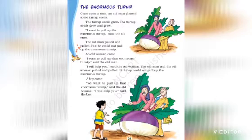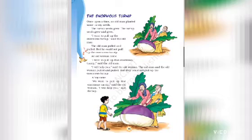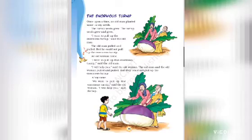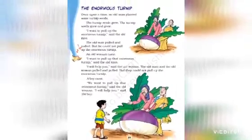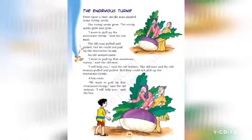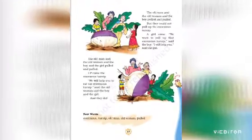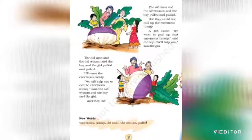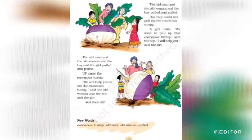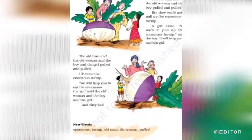The old man and the old woman pulled and pulled, but they could not pull up the enormous turnip. A boy came. 'We want to pull up that enormous turnip,' said the old woman. 'I will help you,' said the boy. The old man and the old woman and the boy pulled and pulled, but they could not pull up the enormous turnip.